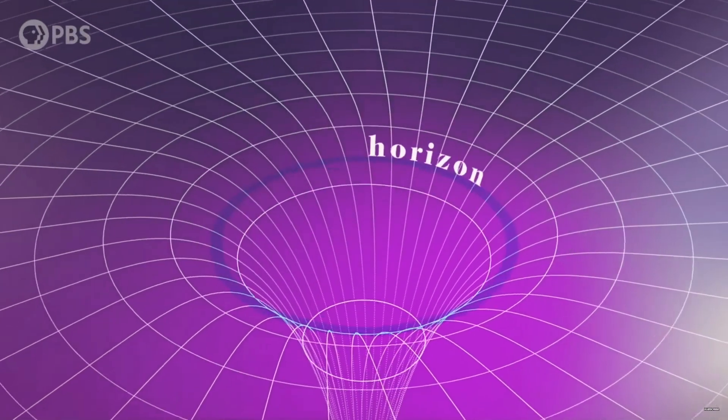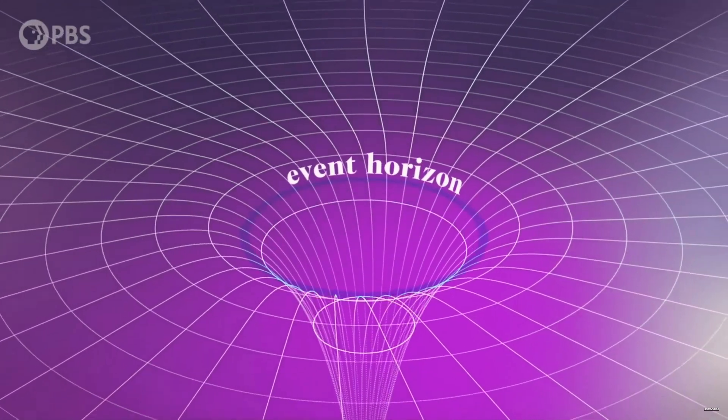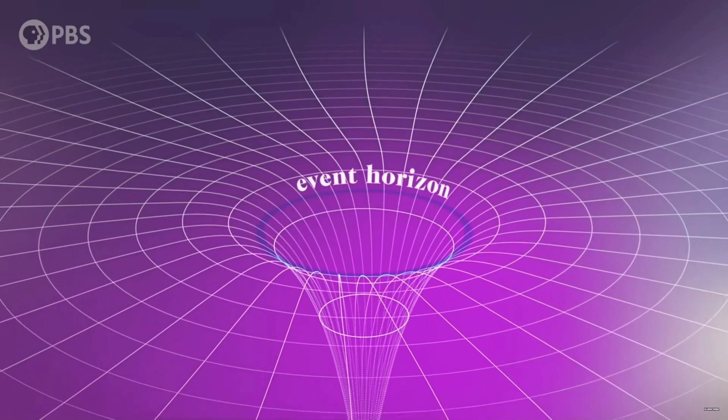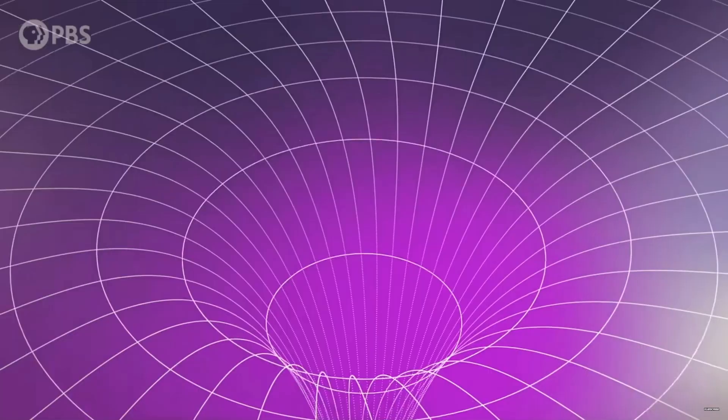So, to return to the original question, an event horizon is just a spherical shell around a black hole at which point spacetime is being pulled backward at the speed of light, making even speedy photons appear stationary.